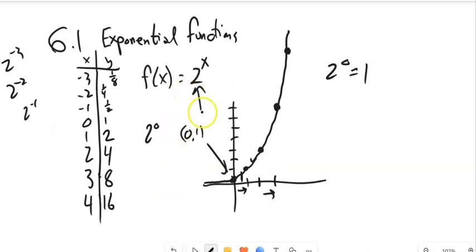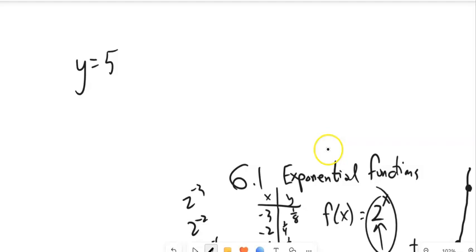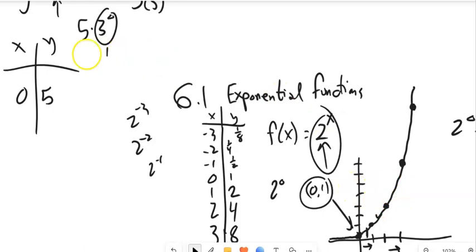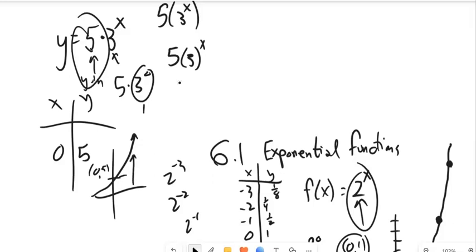This part of the equation right here is the growth factor. That's how fast it's growing each time. So if I think about something that looks like 5 times 3 to the x, it might be written different ways. When x is 0, I have 5 times 3 to the 0, 3 to the 0 is 1, so it's 5. This point (0,1) would be (0,5). And then notice it'd be growing by 3 each time, tripling each time. So we can think of this as the y-intercept (0,5), and then it'll go over 1 and triple in height.